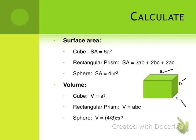Now let's look at volume. For a cube, you take the length of one side cubed. For a rectangular prism, you take side A times side B times side C. And for a sphere, you take four-thirds pi times the radius cubed.